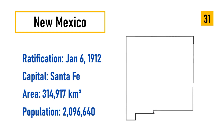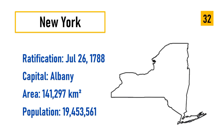Number 31: New Mexico, ratification January 6, 1912, capital Santa Fe, area 314,917 square kilometers, population 2,096,640. Number 32: New York, ratification July 26, 1788, capital Albany, area 141,297 square kilometers, population 19,453,561.